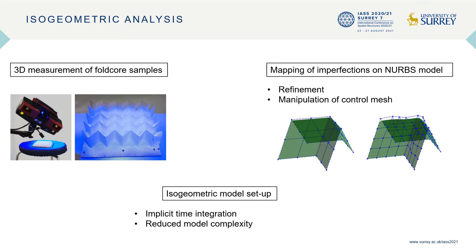To set up the numerical model, three steps were performed. First, real samples of fold cores were manufactured. These were then measured with a 3D scanning system to identify typical imperfections for different Miura-Ori geometries. After that, the imperfections could be mapped onto the NURBS model. For that purpose, we can make use of the possibility to refine NURBS control nets with mathematical operations without actually changing the shape of the surface, and then manipulate the control points so that the surface fits the measurements.